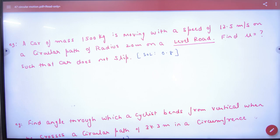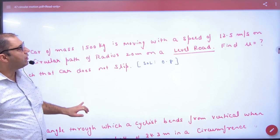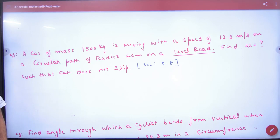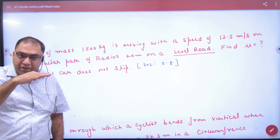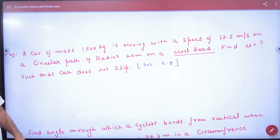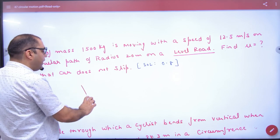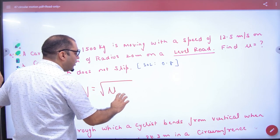Car whose mass 1500 kg is moving with a speed of 12.5 meter per second on a circular path of 20 meter level road. Find mu. Now the same case in level road formula, what would be? V is equal to under root of mu Rg.